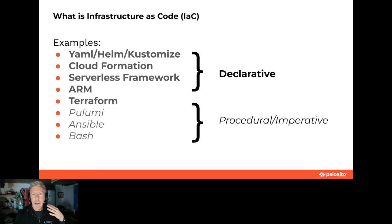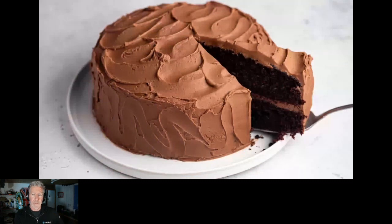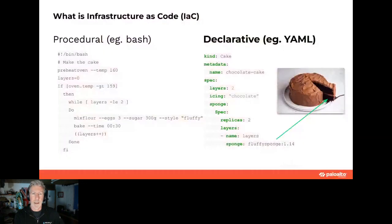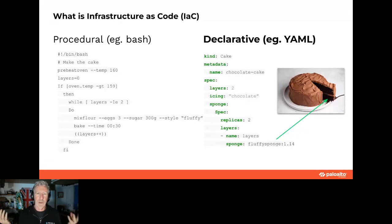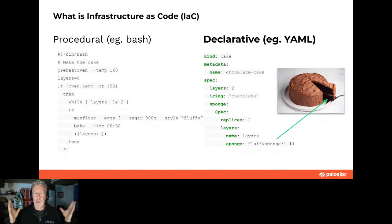Let's put this in the context of cake. I want to bake a cake with Bash. Bash is going to say: preheat the oven, set my layers to zero, loop to make sure the oven's at temperature, mix the flour with the sugar until it's fluffy — I don't know what fluffy means — bake it for 30 minutes, then layers++ until we have all our layers. I haven't even started on the icing.